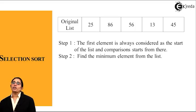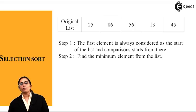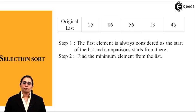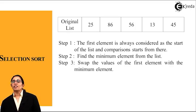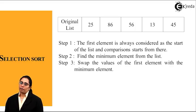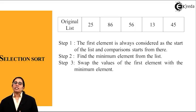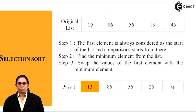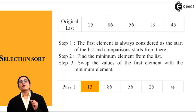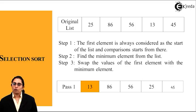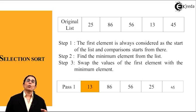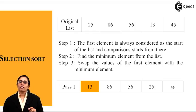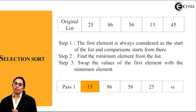Step 2: find the minimum element from the list starting from the next element. Since 25 is at position 1, we start comparison from the second element onward and swap the first element with the minimum found. Traversing from 86 to 45, we find that 13 is the minimum element. We then swap the positions of 13 and 25. After pass 1, the list becomes: 13, 86, 56, 25, 45.